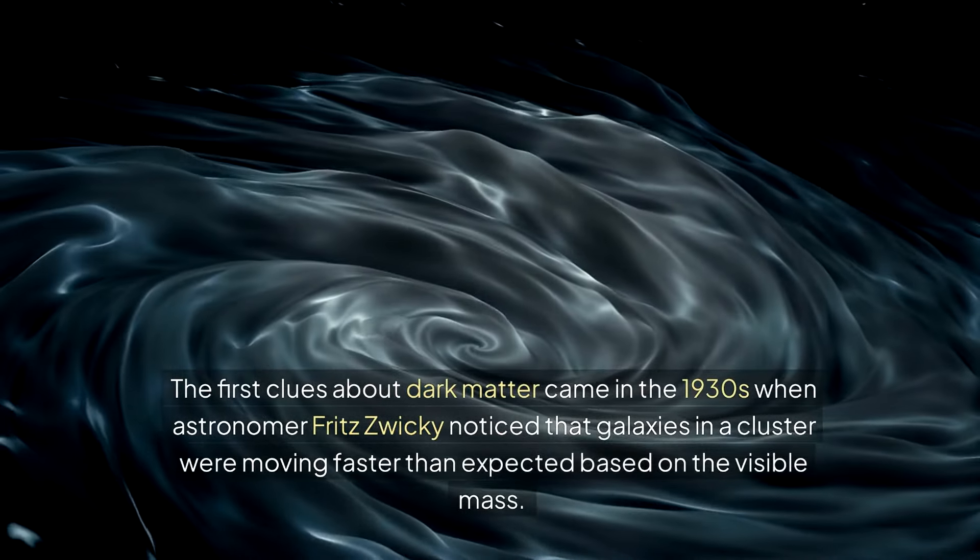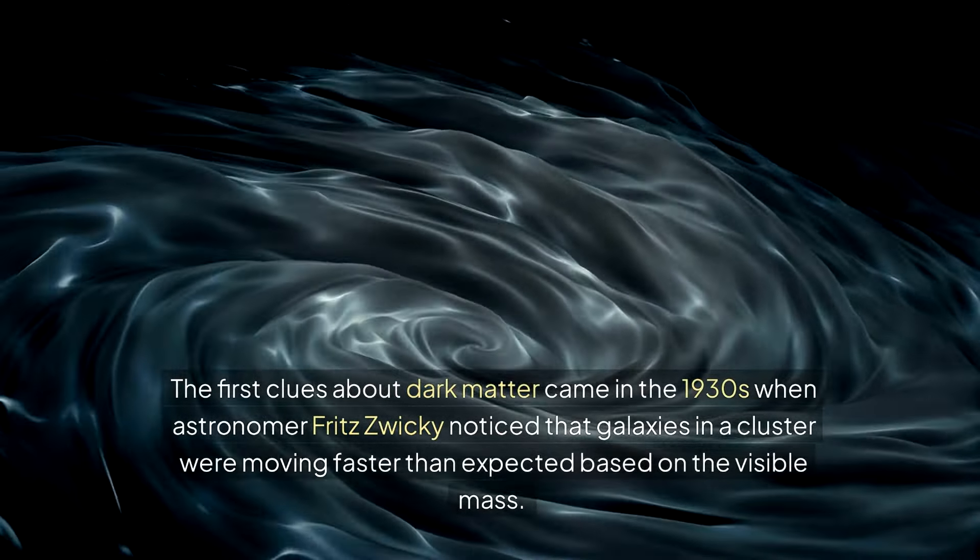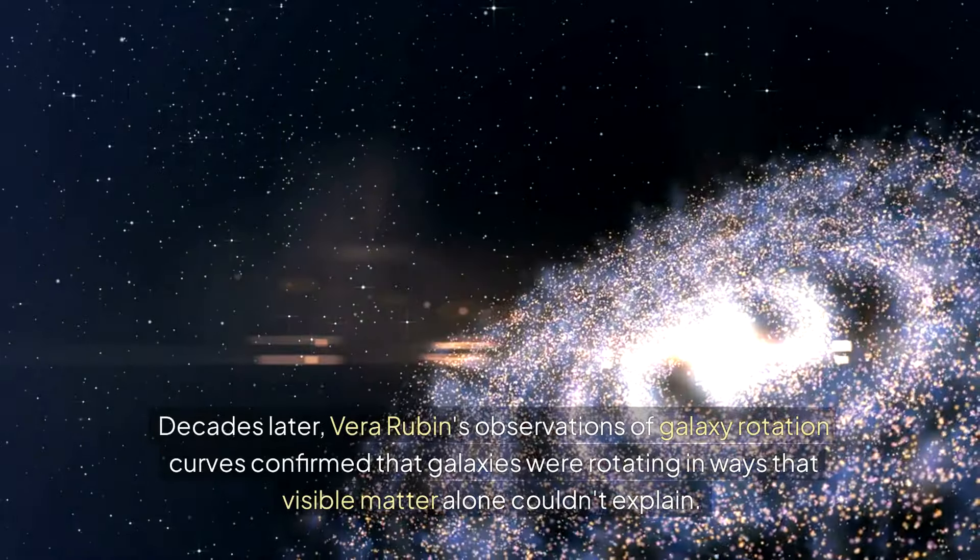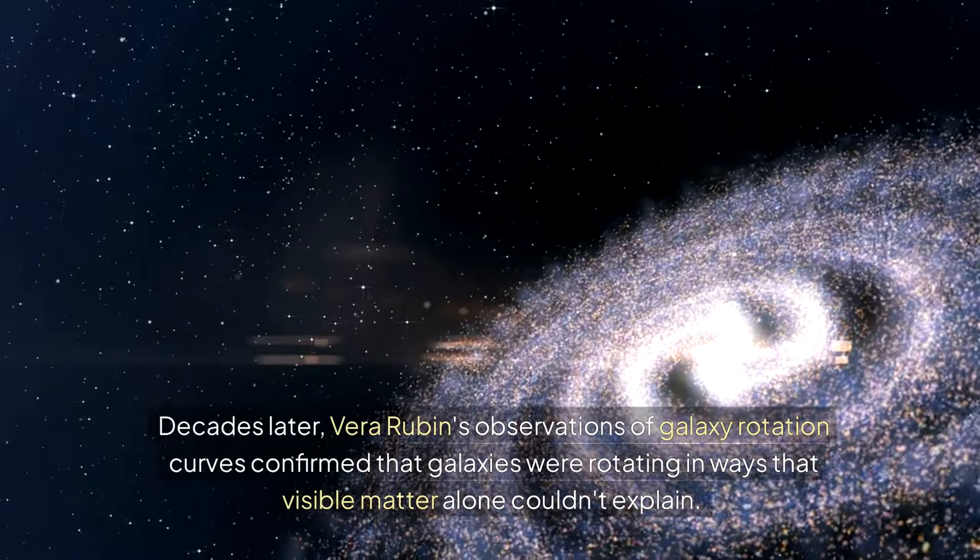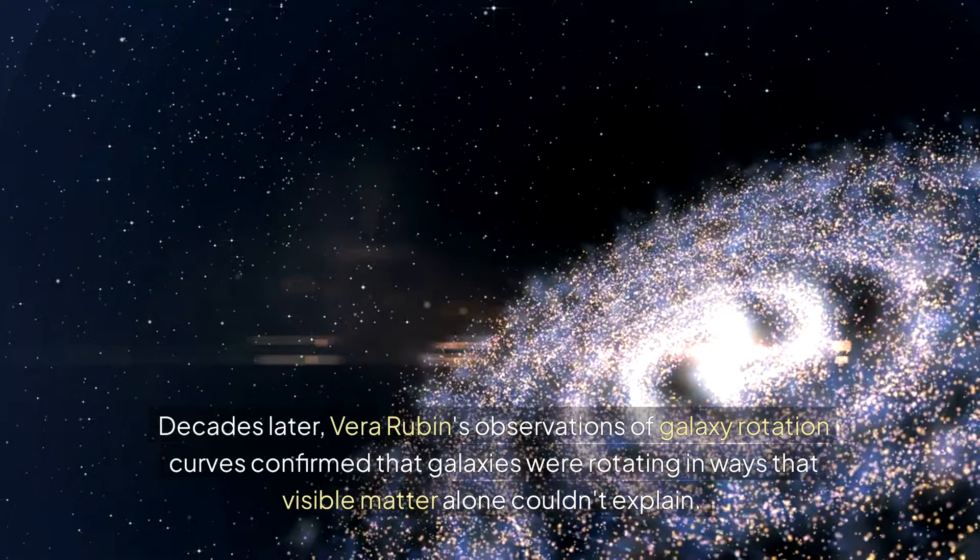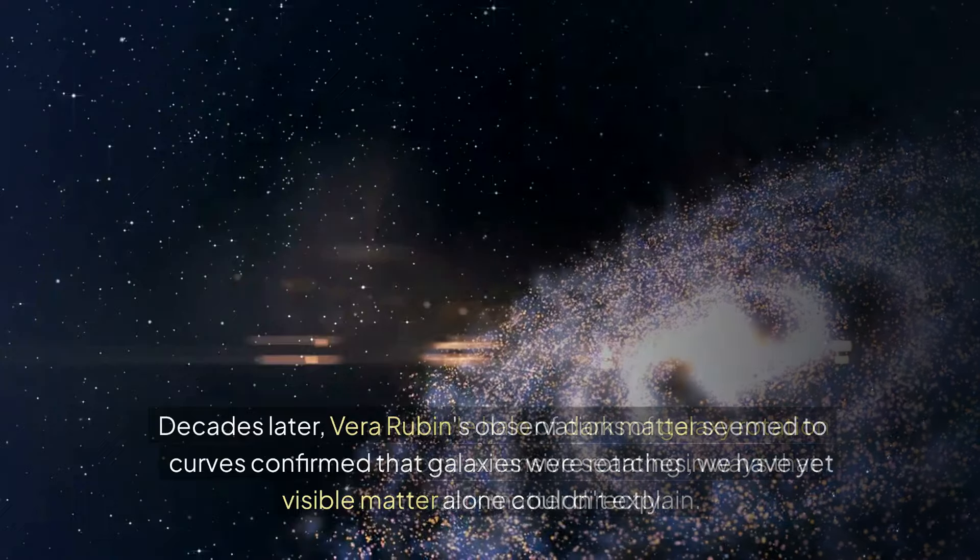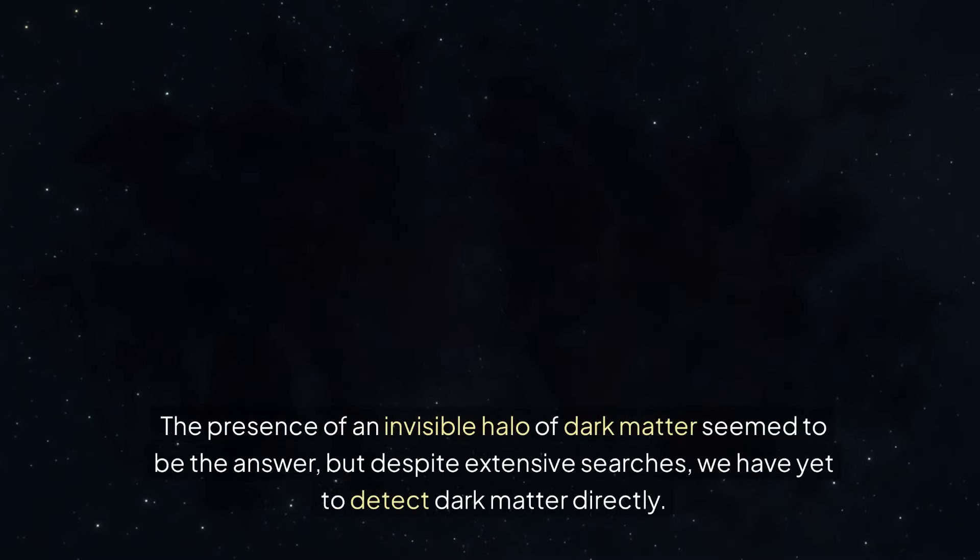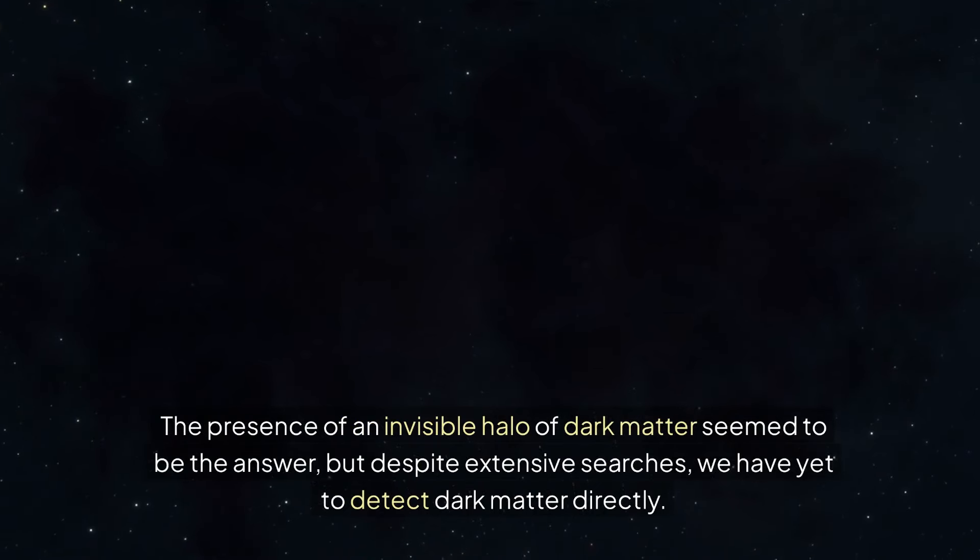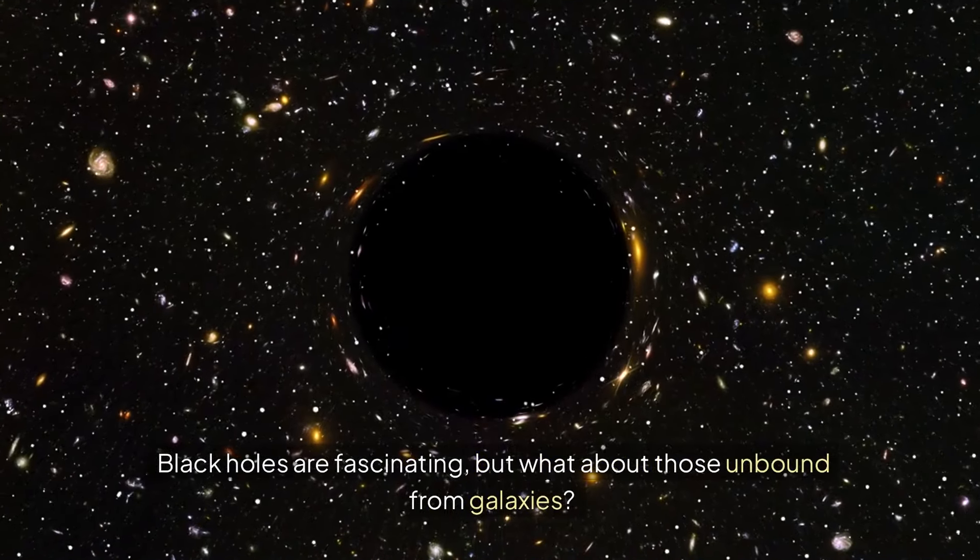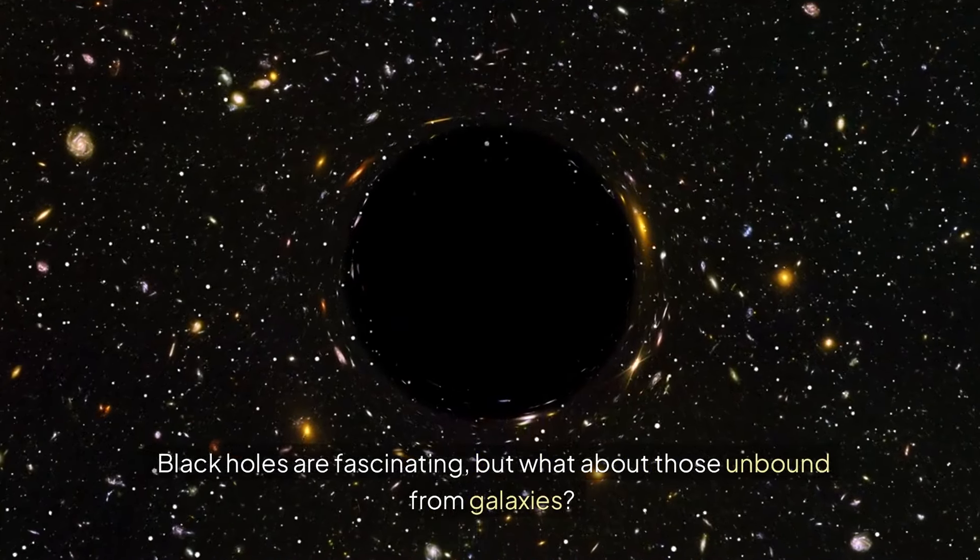The first clues about dark matter came in the 1930s when astronomer Fritz Zwicky noticed that galaxies in a cluster were moving faster than expected based on the visible mass. Decades later, Vera Rubin's observations of galaxy rotation curves confirmed that galaxies were rotating in ways that visible matter alone couldn't explain. The presence of an invisible halo of dark matter seemed to be the answer, but despite extensive searches, we have yet to detect dark matter directly.